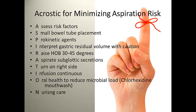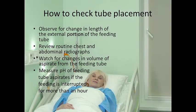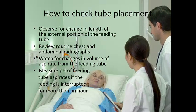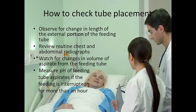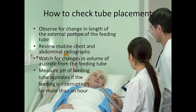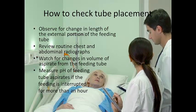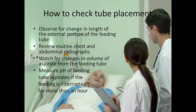Good nursing care and good monitoring of the patient are essential. Checking tube placement is another key way to reduce the risk of aspiration — check the length of the external portion of the feeding tube, as these are usually marked and you can confirm it hasn't migrated. Review routine chest and abdominal radiographs for the portal end of the tube. Watch for changes in the volume of aspirate from the feeding tube, and measure the pH of tube aspirates if the feeding is interrupted for more than an hour.